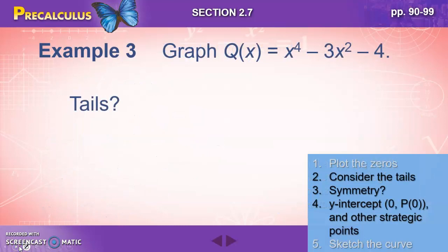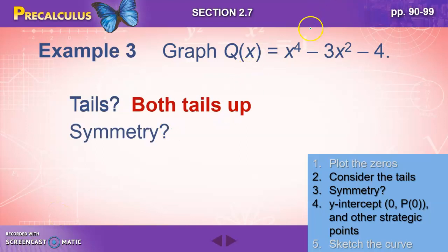Considering the tails, we've got a positive leading coefficient and a positive or even number degree. So both tails are up. As far as symmetry is concerned, each of those degrees is even. So we've got symmetry across the y-axis.